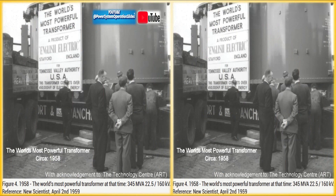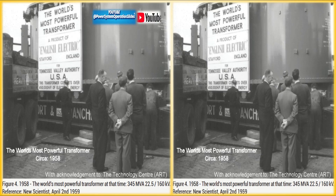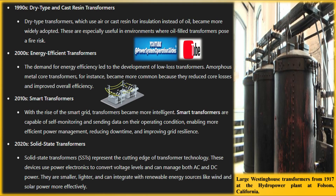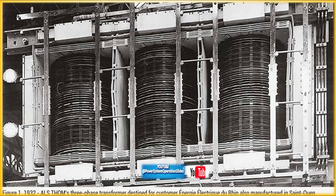The late 1880s and early 1890s saw continued advancements in electrical technology. Charles Brown developed the first oil-insulated transformer, addressing dielectric failure issues. Nikola Tesla, Galileo Ferraris, Jonas Wenstrom, and Delivo Dobrovolski independently proposed polyphase AC systems, while engineers at Gans Electric Works introduced improved transformers with shell-type designs. These innovations laid the groundwork for modern electrical transmission systems.